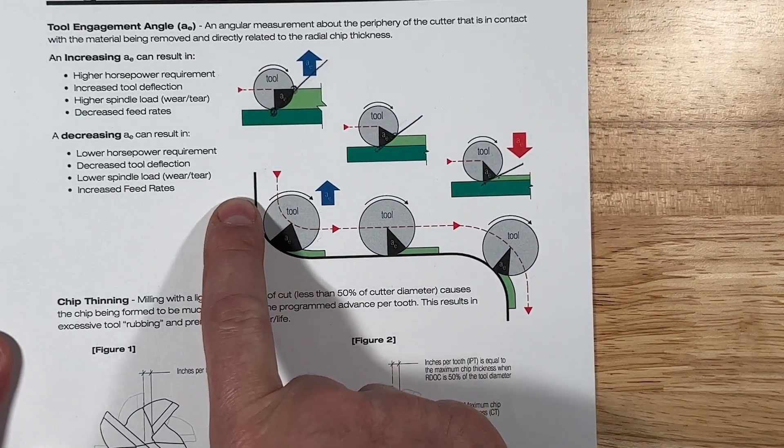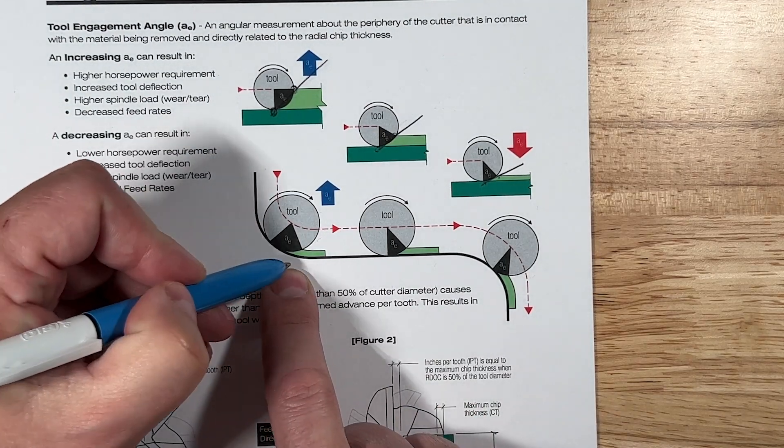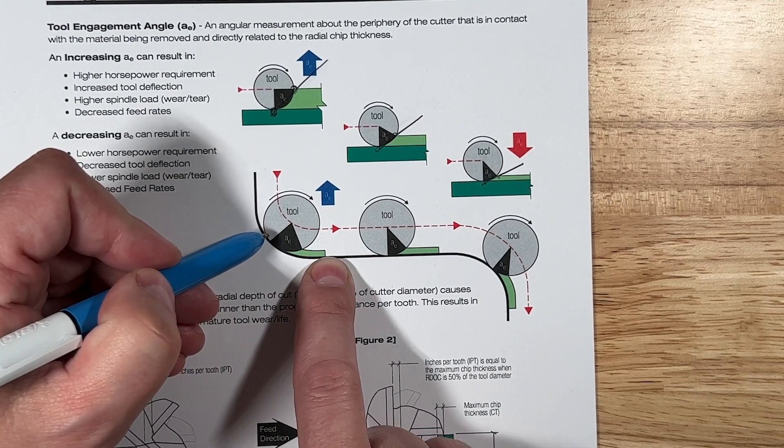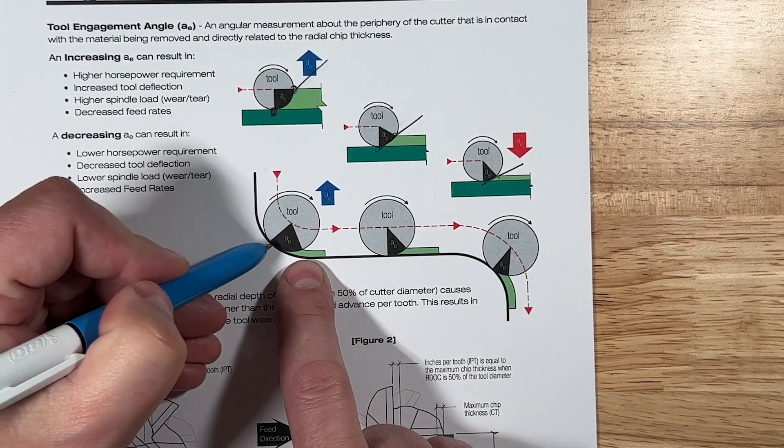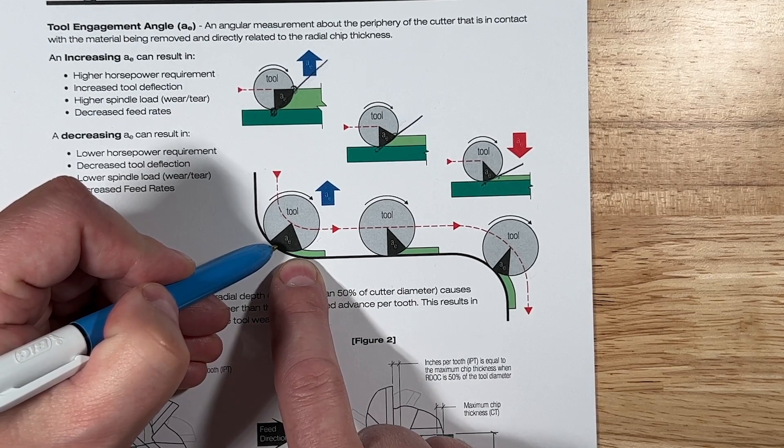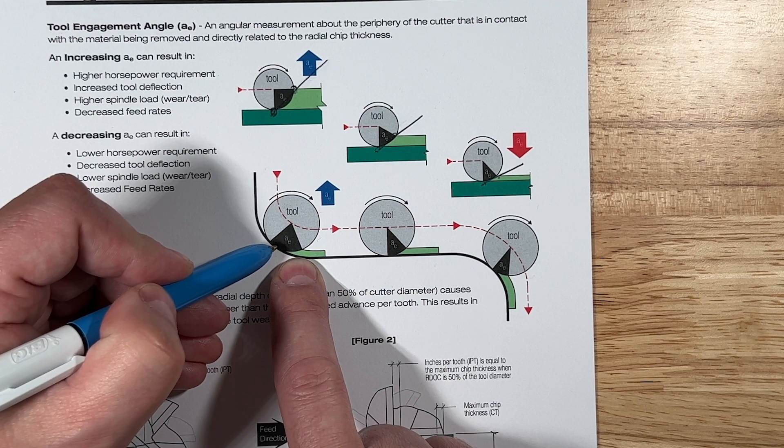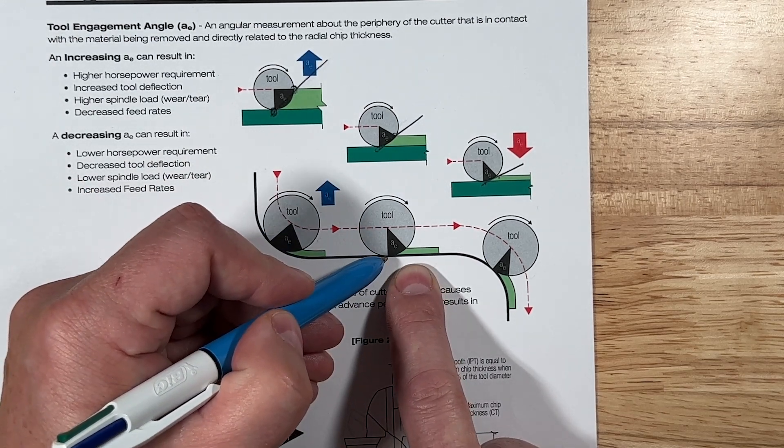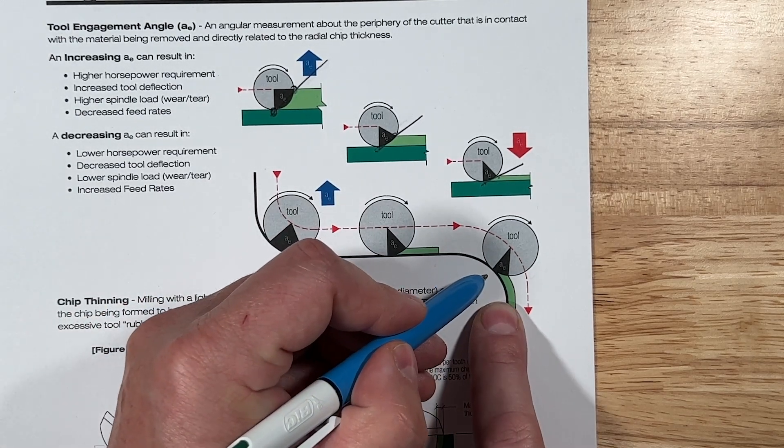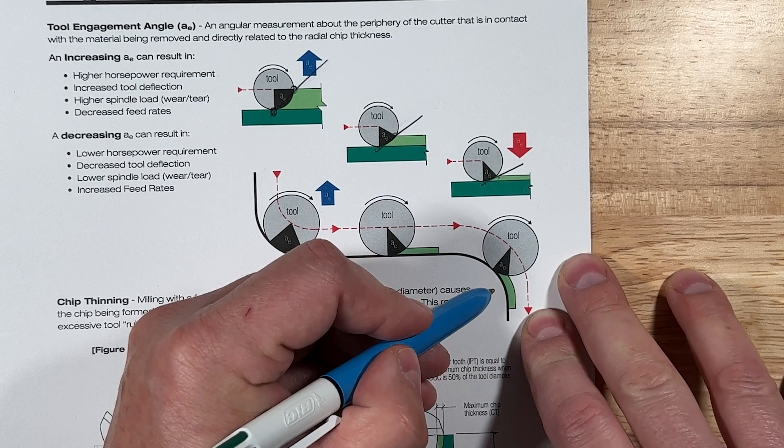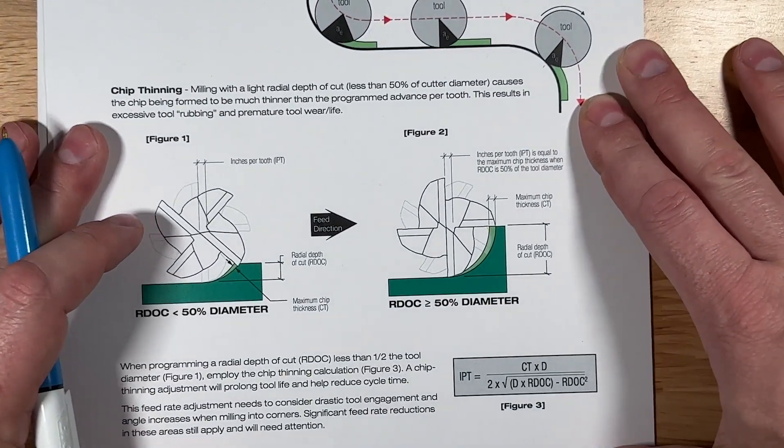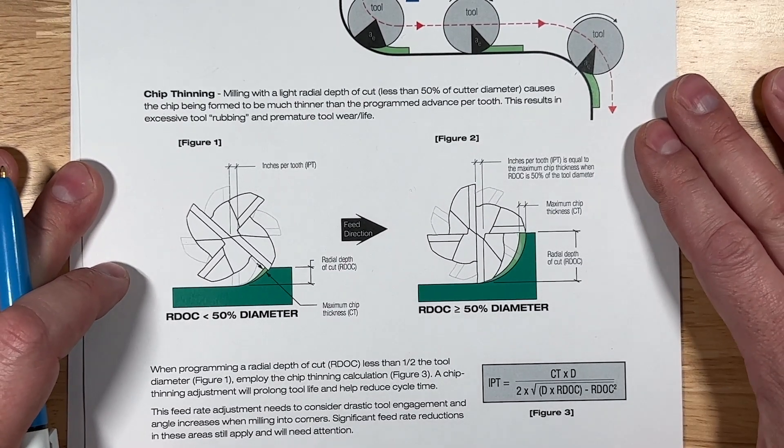This thing also does a really good job. This sheet does a really good job of a couple of other things. It shows a good example of this relationship between an inside radius on your part versus your tool diameter, and you can see that as you come across this inside radius, your engagement increases, which means your tool load increases. As you come out onto a flat, it goes back to maybe what it was programmed at, and then as it goes around an outside corner, it reduces kind of like an inverse relationship.